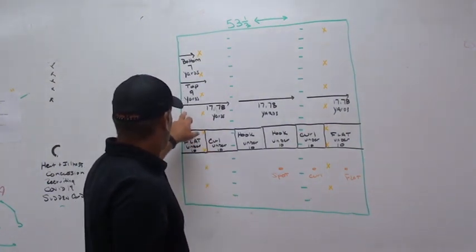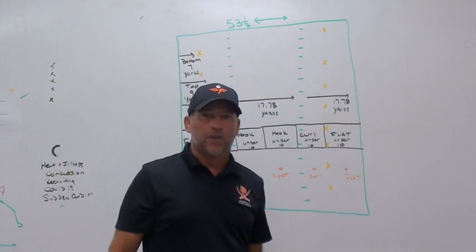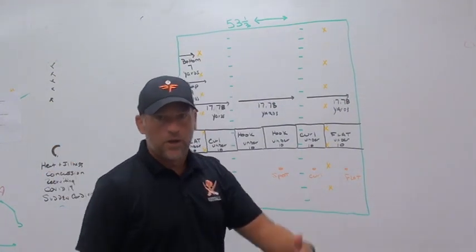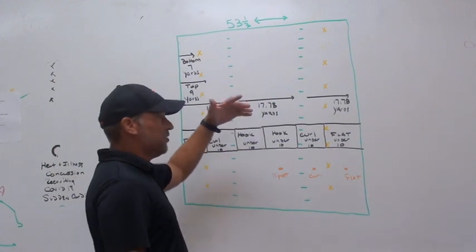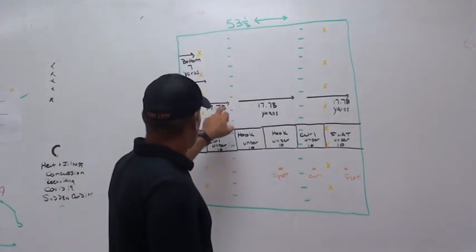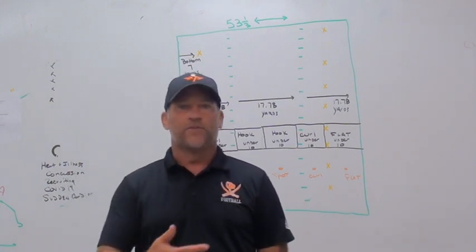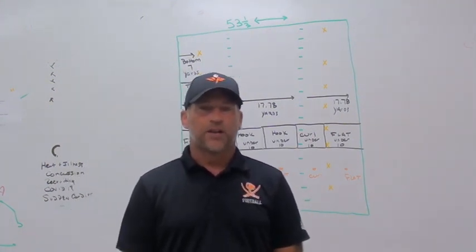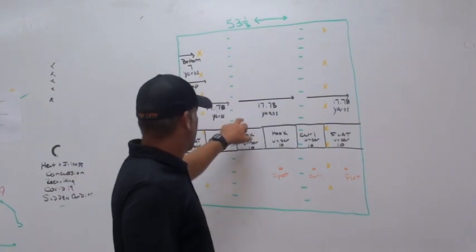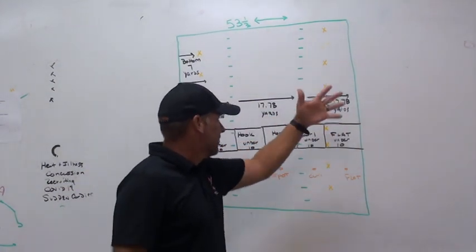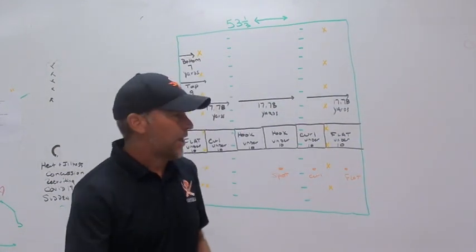From the sideline to the hash mark is about 17.78 yards. If you went to 18 you'd end up almost a yard long — 18 times three is 54, not 53 and a third. At 17.78 you get the exact yardage from sideline to hash, hash to hash, and hash to sideline, because the high school field divides pretty much equivocally into thirds. So: sideline to hash is 17.78, hash to hash is 17.78, and hash to sideline is 17.78.